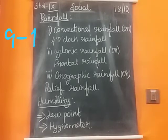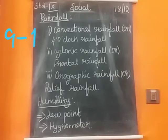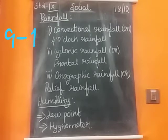The first one is convectional rainfall, also called 4 o'clock rainfall. Why is it called 4 o'clock rainfall? Earth's surface is intensely heated through solar radiation during the daytime. See page number 188 and the picture — convection rainfall.